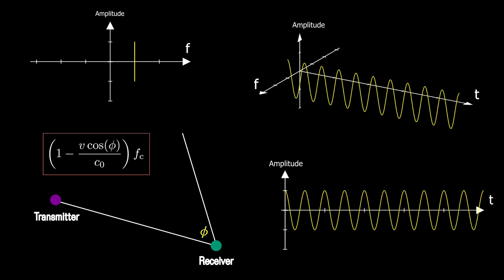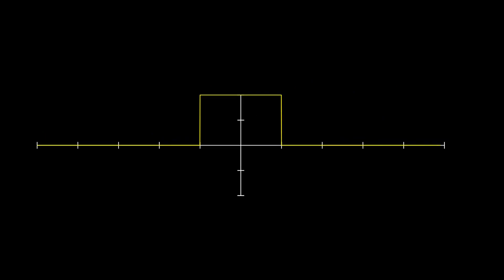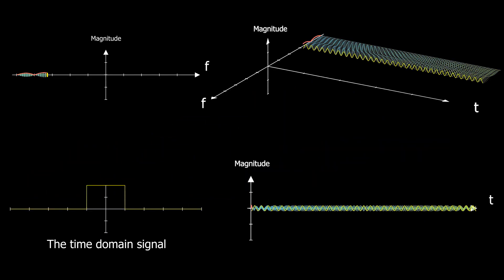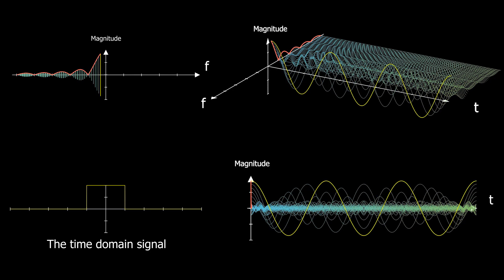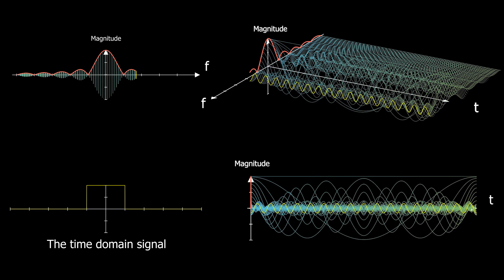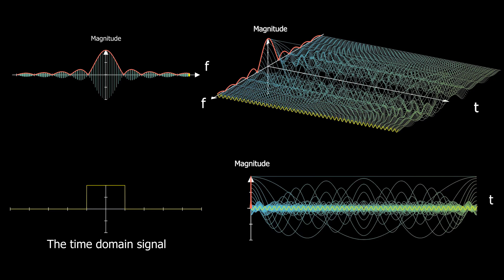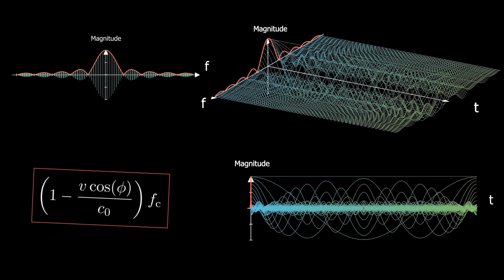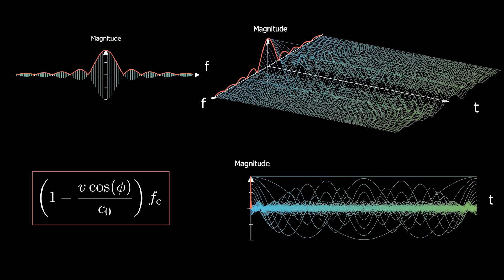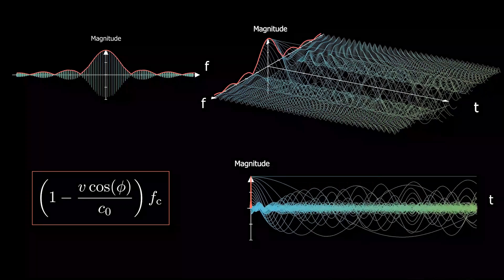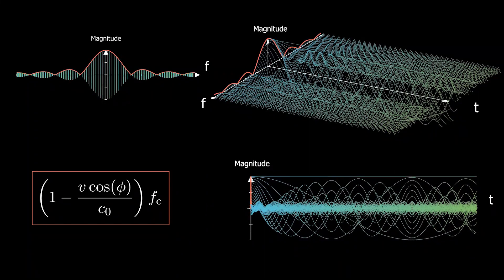But this is for a single tone. What if we transmit an arbitrary information signal? We know from the Fourier transform that any signal can be decomposed into a linear combination of sinusoids. Since the Doppler shift depends on the frequency, each sinusoid included in a signal experiences a different Doppler shift according to its frequency.